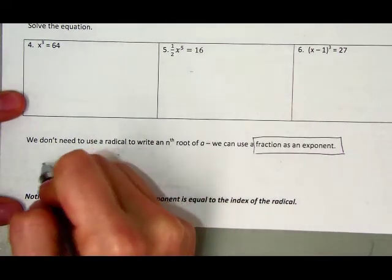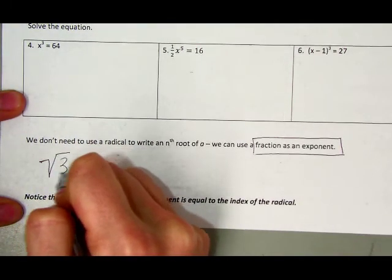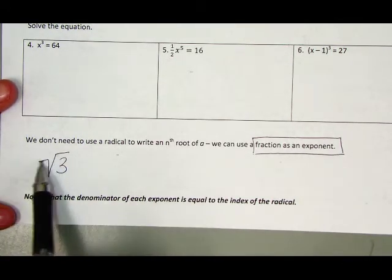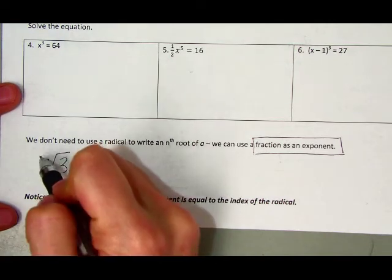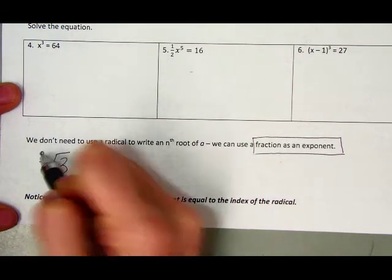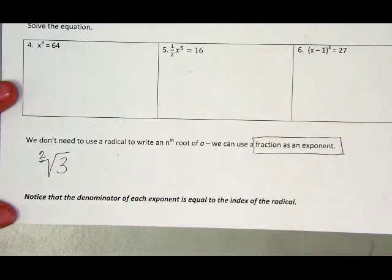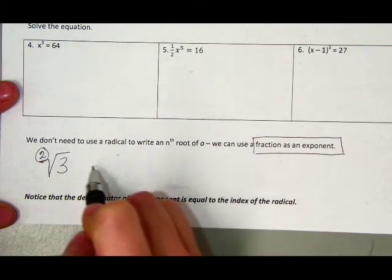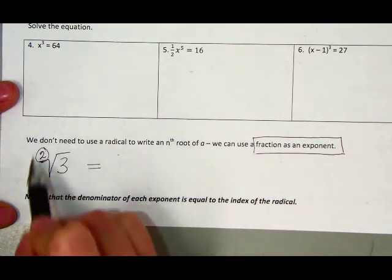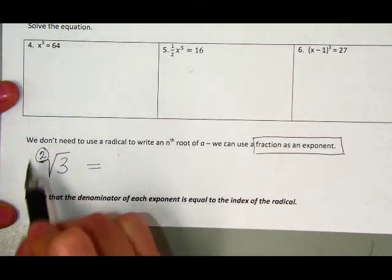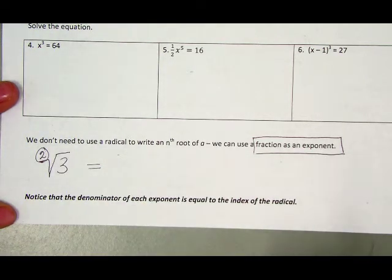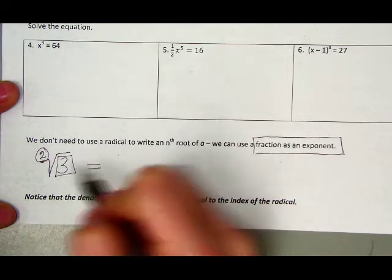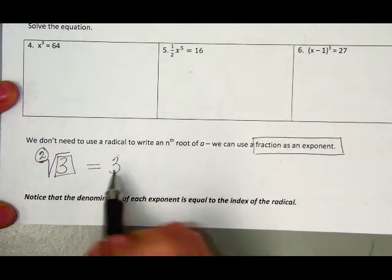So if I were to write something like the square root of 3, you guys have known that for a long time, that number, that index number is actually invisible there, but we know that invisible number to actually be 2. So that index number, which is 2 in this case, if we wanted to, we could write this radicand or this radical number as an exponent, a fraction exponent. And we do that by taking the inside radicand as our base, so the 3 is our base.